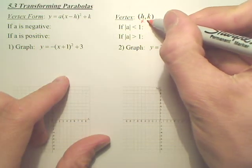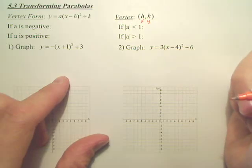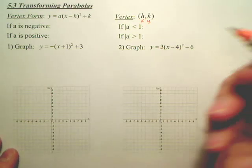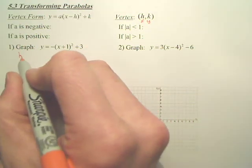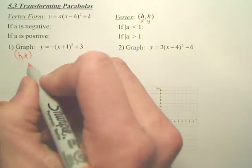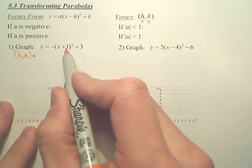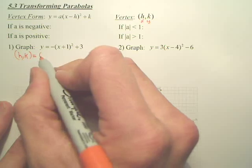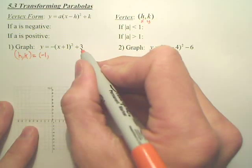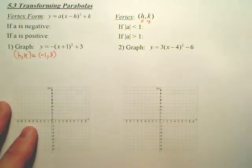Remember, HK, XY, it's a coordinate. And, so if we look at this graph right here, your HK is simply going to be the opposite of 1 is negative 1, and then you leave 3. That's your vertex.